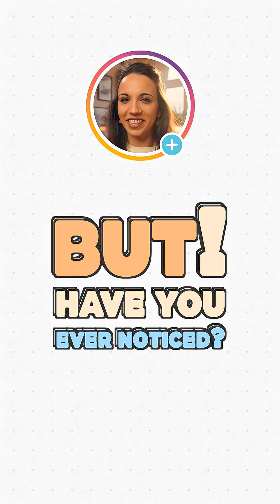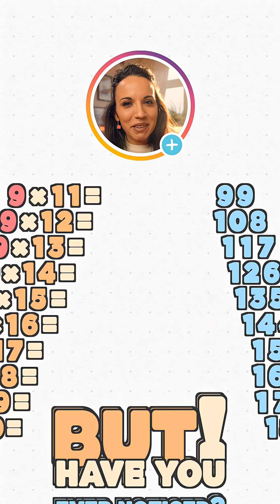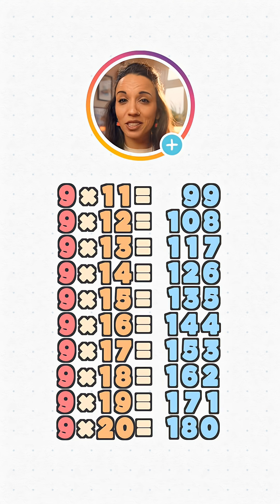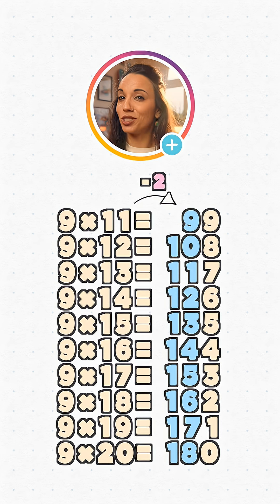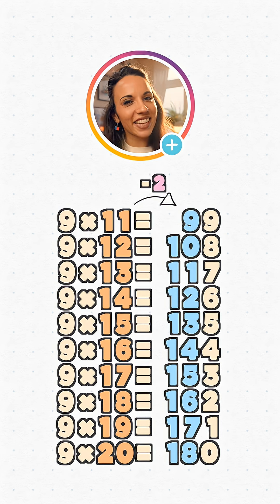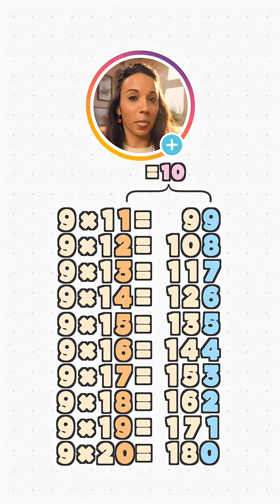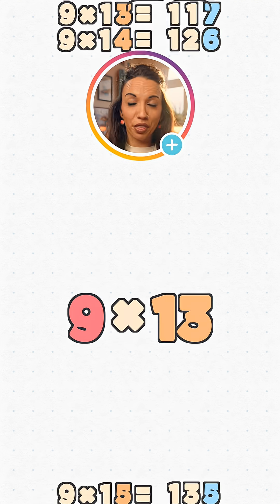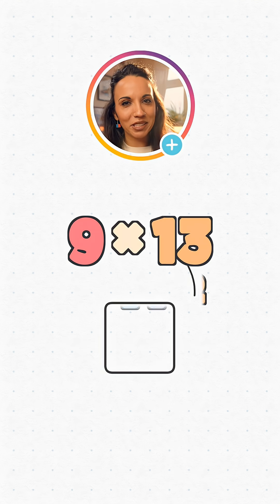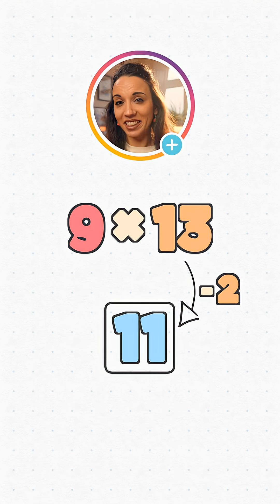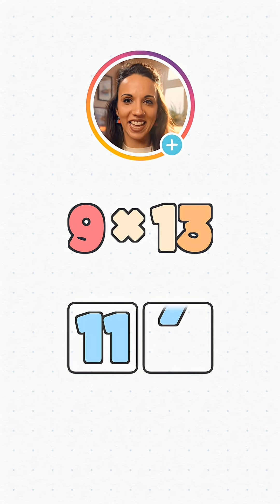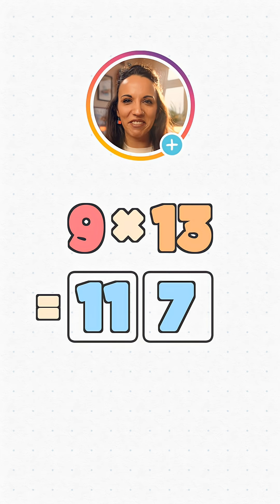But have you ever noticed that a similar pattern continues from eleven to twenty? This time, the first part of the answer is two less than our number, and the second part is the difference between the unit digit and ten. So if we've got thirteen times nine, we take away two from our number — thirteen take away two is eleven. Then we find the difference between three and ten, that's seven. So thirteen times nine is one-one-seven.